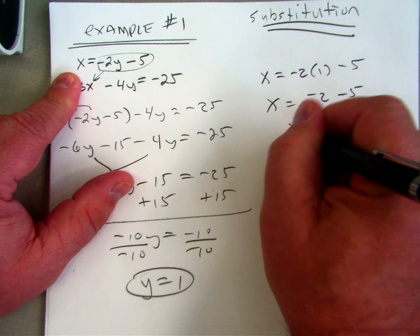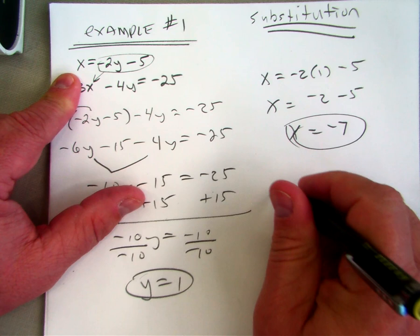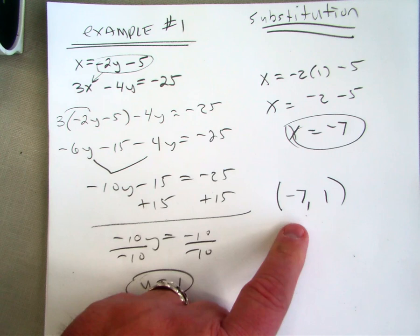So I have a coordinate. The x was negative 7 and the y was 1. This is the point where these two lines cross.